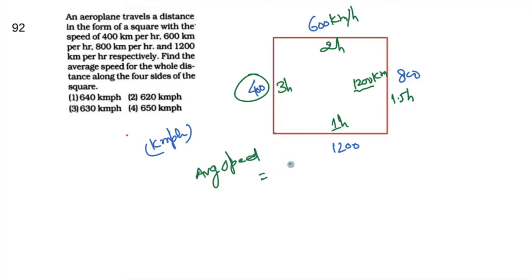The average speed is total distance over total time. Total distance is 4800 km. Total time is 3 plus 2 plus 1.5 plus 1, which equals 7.5 hours. So this total is 7.5.